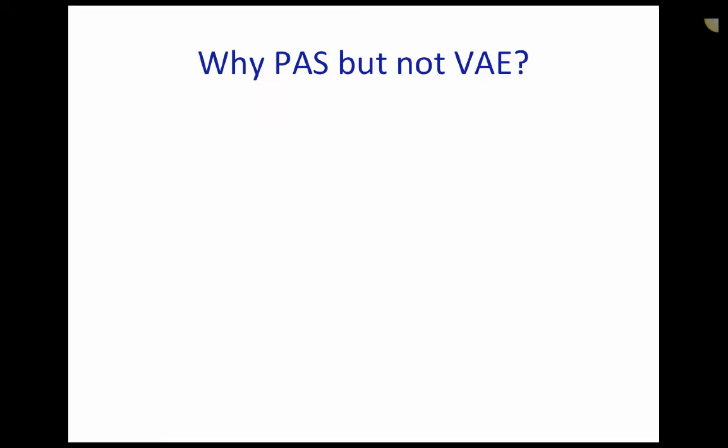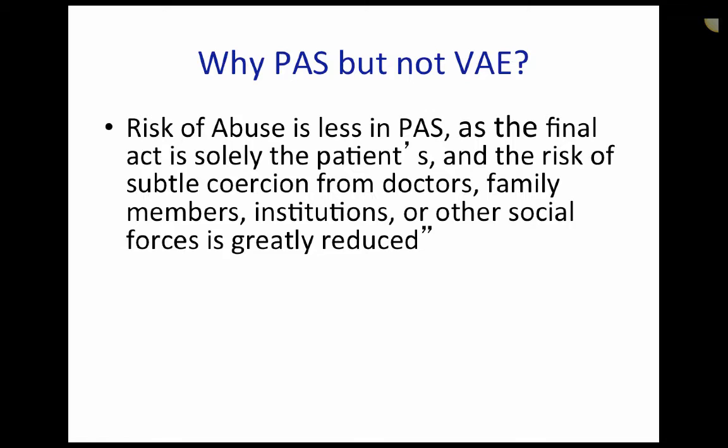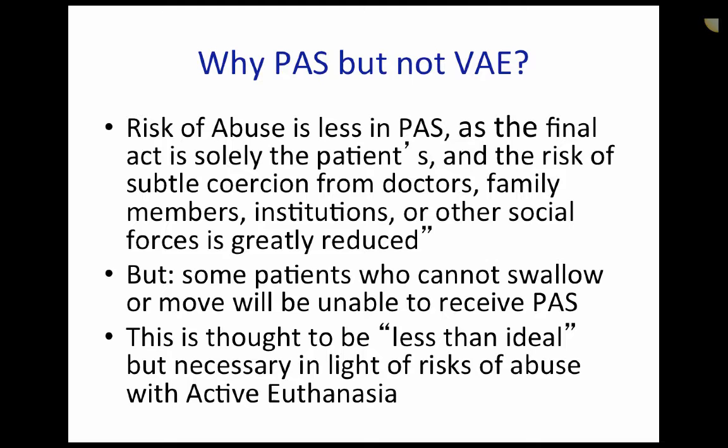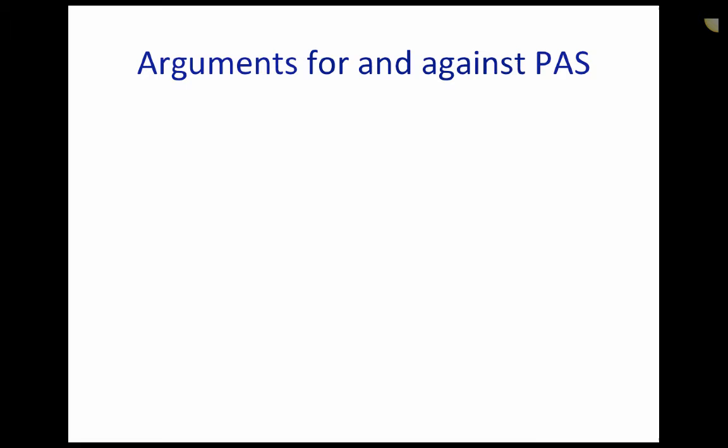Why is physician-assisted suicide more readily legal but not voluntary active euthanasia? Well, the risk of abuse is less in physician-assisted suicide as the final act is solely up to the patient, and hence the risk of subtle coercion from doctors, family members, institutions, or other social forces is greatly reduced. But there are some patients who cannot swallow or move and hence will be unable to initiate physician-assisted suicide. This is thought to be less than ideal but necessary in light of the risk of abuse with active euthanasia. There are, however, arguments for and against physician-assisted suicide.